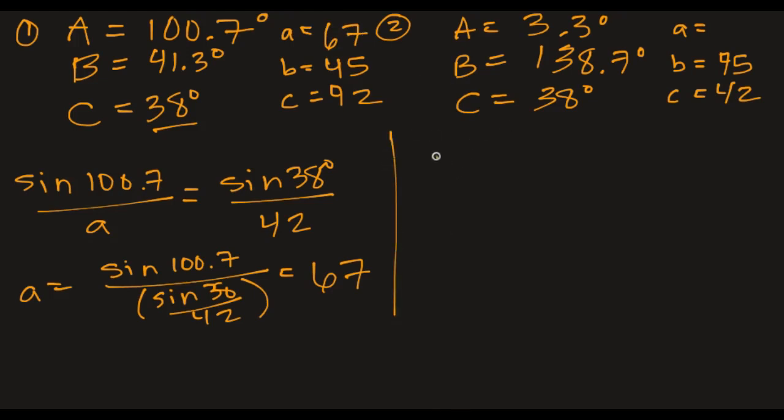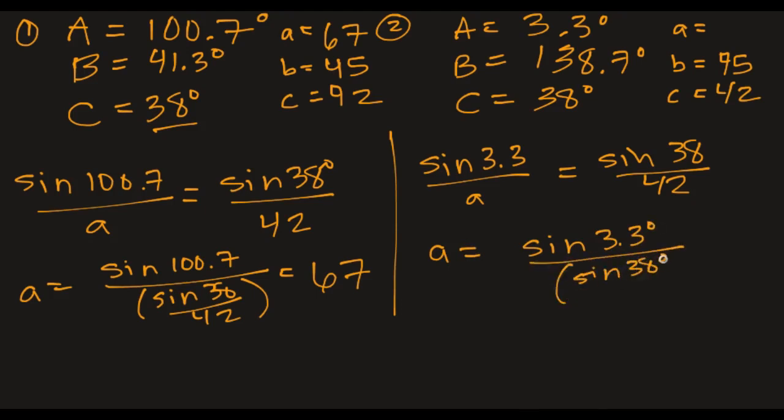And then in the second case, we have sine of 3.3 over little A is the sine of 38 over 42. So A is the sine of 3.3 degrees divided by the sine of 38 over 42. And according to my calculator, that is 3.93. So you might say, wait, where's my mental check here? Because this is not in the realm of 45 and 42. But remember, the angle was 3.3. So this is a teeny tiny angle. It's a pretty squished little triangle with a very small side. So that does make sense.